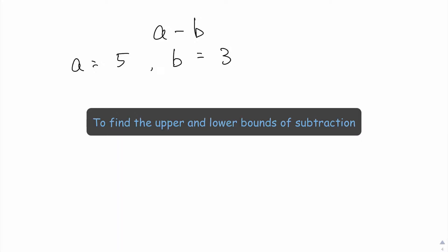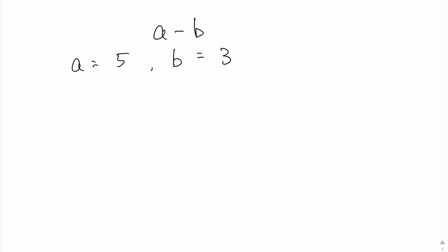Hello everybody. Now I will show you how to find the upper bound and lower bound of a combination of two variables a minus b. Well to find the lower and upper bounds of a minus b, first of all you will have to write down the upper and the lower bounds of a and b.